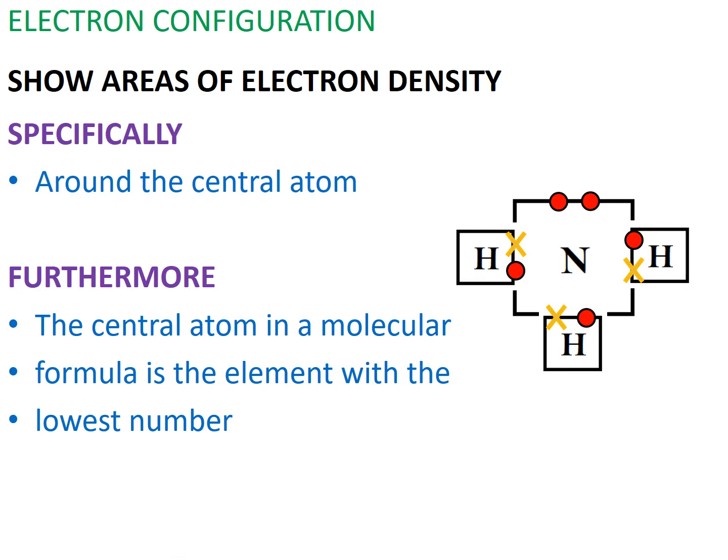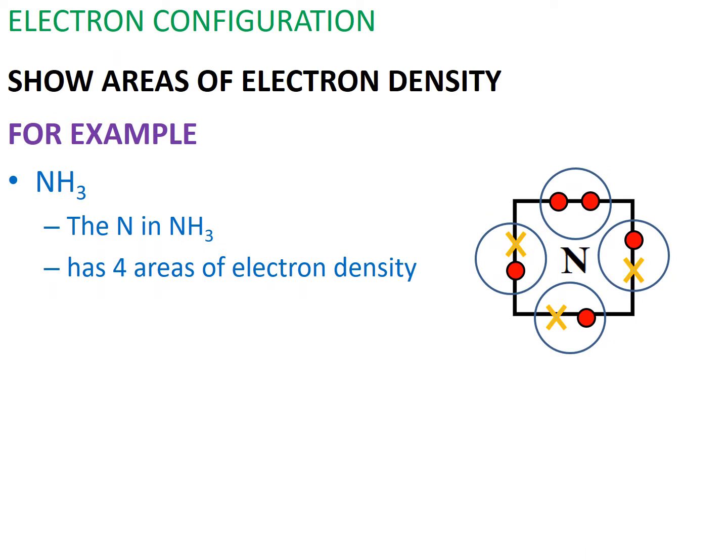The second point to this lesson is that electron configuration can also show areas of electron density, specifically around the central atom in a molecule. The central atom in a molecular formula is the element with the lowest or smallest number. Again, let's use ammonia as our example. Looking at the molecular formula of ammonia, we have one nitrogen and three hydrogens, so nitrogen would be our central atom.